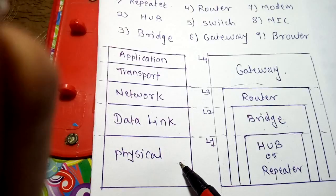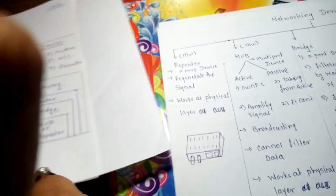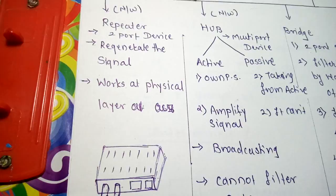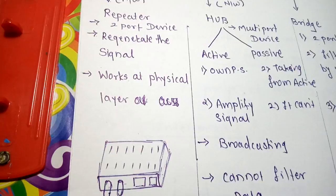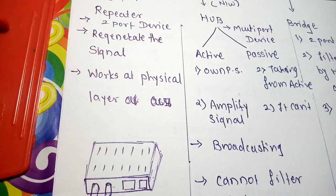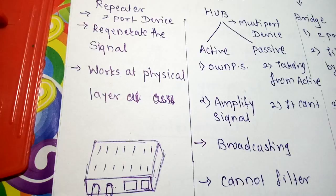Now we will move towards the details of networking devices. First, concentrate on the repeater. Repeater comes under networking devices. As I said before, networking devices are categorized into networking device and internetworking device. Repeater and hub come under networking devices. So repeater is a two-port device with input and output ports.